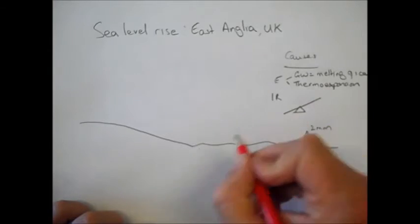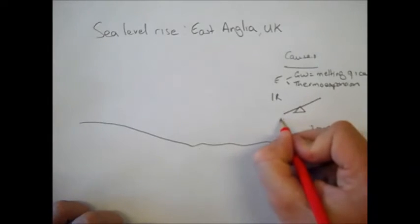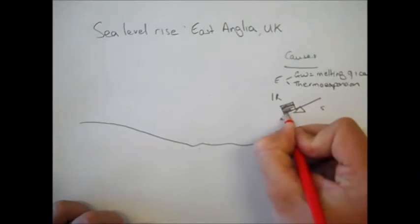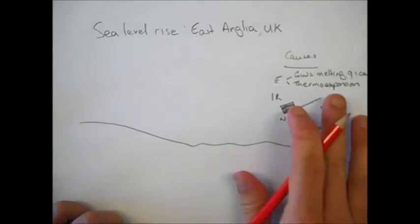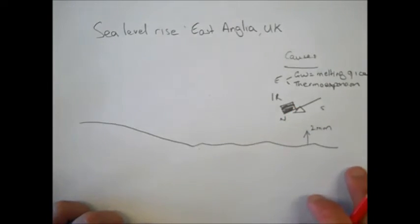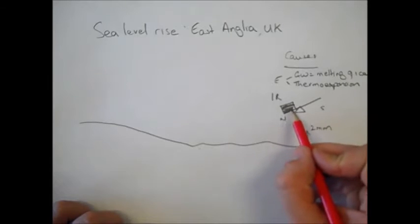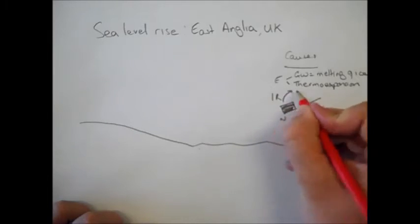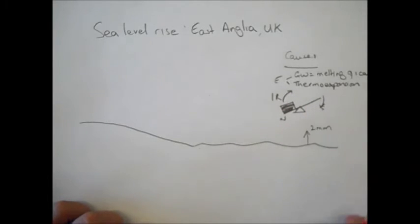During the ice age, if this is the north and this is the south, the north would have been weighed down by a large block of ice. That would have lifted the south out of the water, therefore making the sea level appear lower. Obviously we're now seeing a change in that as the ice in the north of the UK has melted, and as a result the north is now starting to come back up, whilst the south is starting to re-stabilize and move its way back down towards the sea.